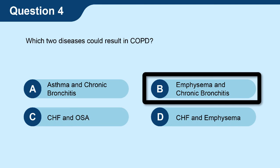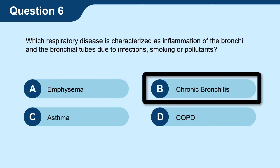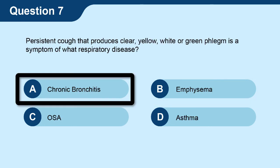Question four: which two diseases could result in COPD? The answer is B — emphysema and chronic bronchitis. Question five: which of the following is a cause of congestive heart failure? The answer is A — coronary artery disease. Question six: which respiratory disease is characterized as inflammation of the bronchi and bronchial tubes due to infections, smoking, or pollutants? The answer is B — chronic bronchitis.